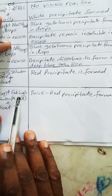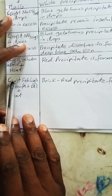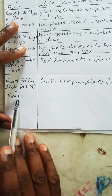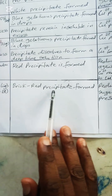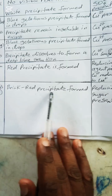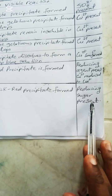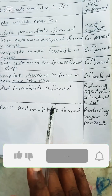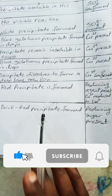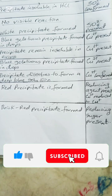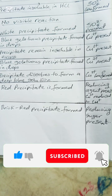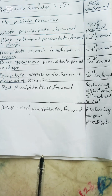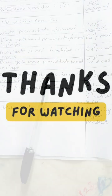Another test: solution C plus Fehling's solution A and B, heated. You are expected to have a brick red precipitate formed, which means reducing sugar is present. Subscribe to this channel to have more of this, and I will also produce a video to help you with volumetric analysis and your NECO exam. Thank you and God bless.